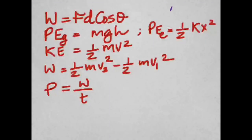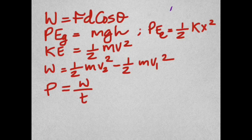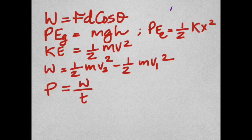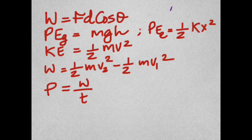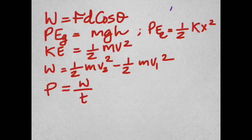Here are the formulas covered in this chapter: work is F·d·cosine theta; gravitational potential energy is mgh; elastic potential energy is one-half Kx squared; kinetic energy is one-half mv squared. The work-energy theorem states that work done is equal to the change in kinetic energy. And power is work over time. I hope you've understood all these concepts — now follow along to see how the problems in this chapter are worked out. Thank you and good luck.